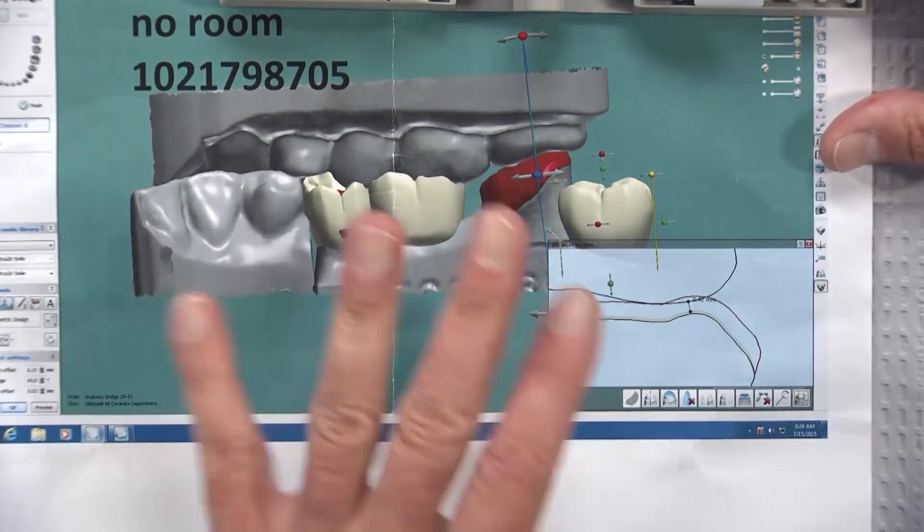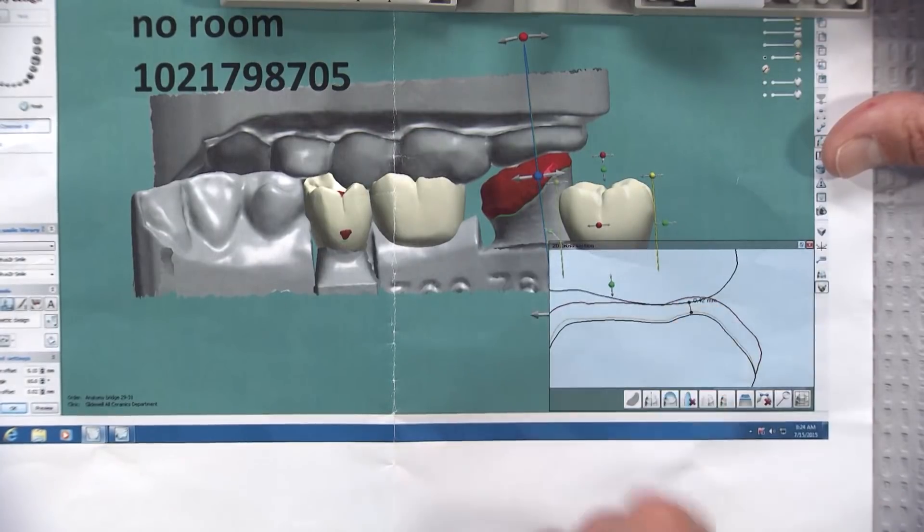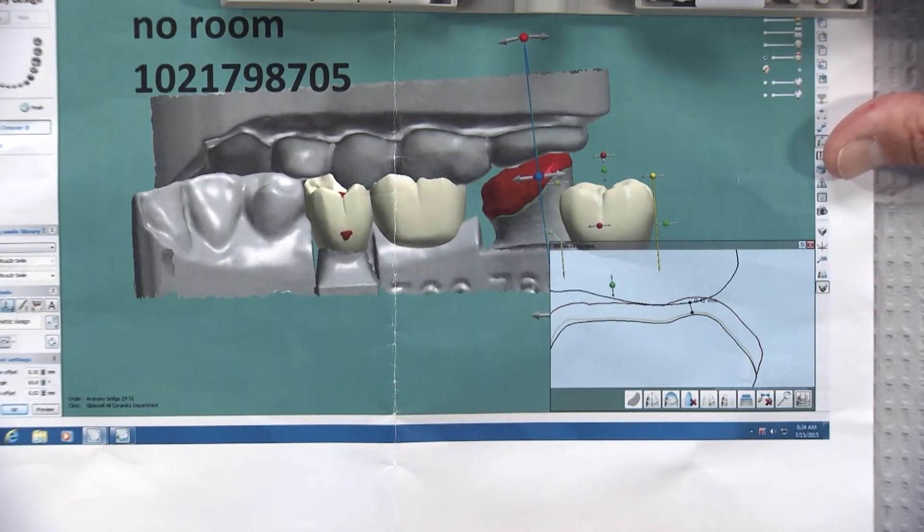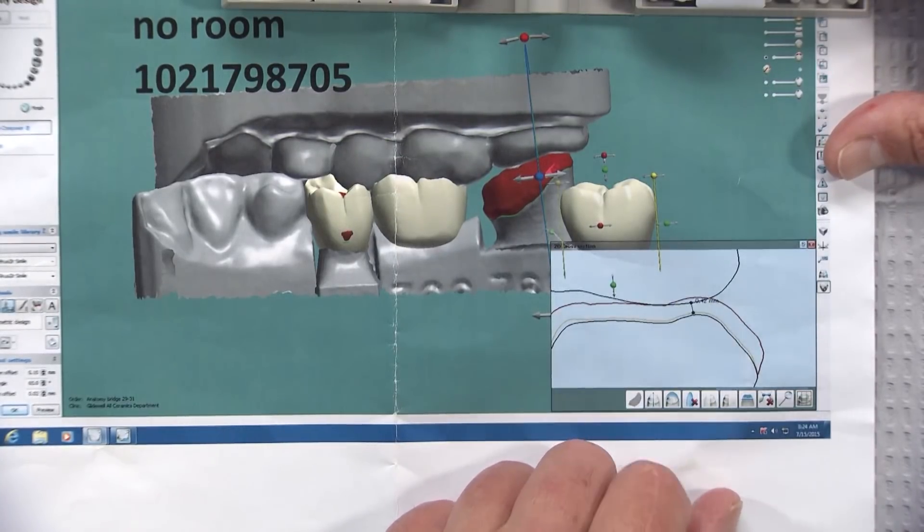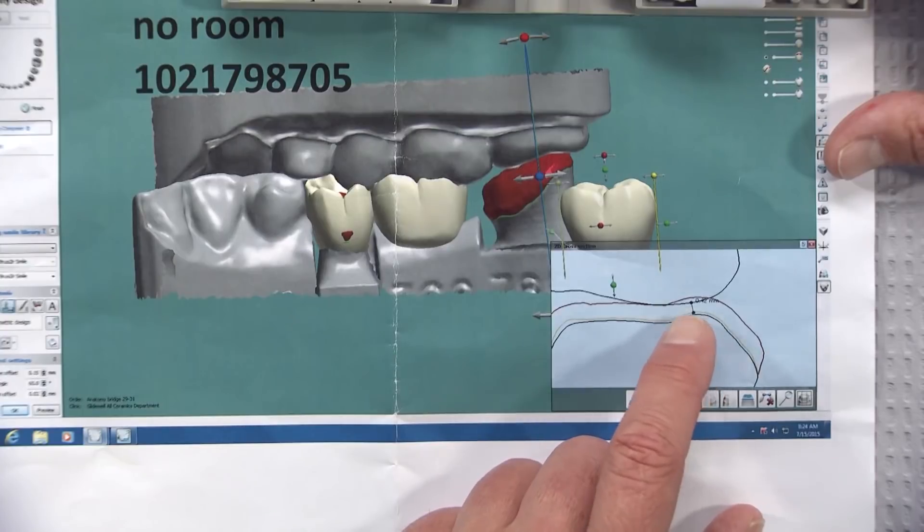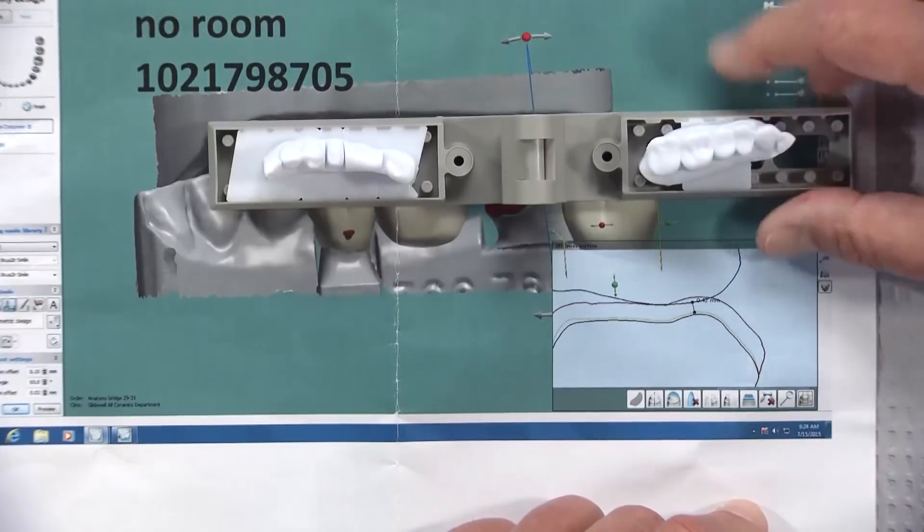Most of the newer versions of intraoral scanners, including 3M's newest True Definition, will allow the doctor to see this in the office. This doctor did not get an opportunity to see this, did not know that he did not have enough room for Bruxer solid zirconia here, which is a minimum of 0.6 millimeters.